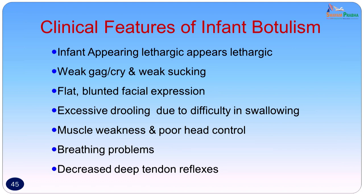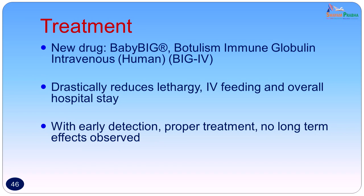The clinical features of infant botulism are: the infant initially appears lethargic, gives a weak cry, does not suck milk properly, has a flat blunted facial expression, excessive drooling due to difficulty in swallowing, muscle weakness, and poor head control. Breathing problems are noted and decreased tendon reflexes are found on examination. A new drug called Baby-BIG (botulism immunoglobulin) is now available and can be given intravenously in these babies. It drastically reduces lethargy, intravenous feeding requirements, and overall hospital stay. With early detection and proper treatment, no long-term effects are observed.